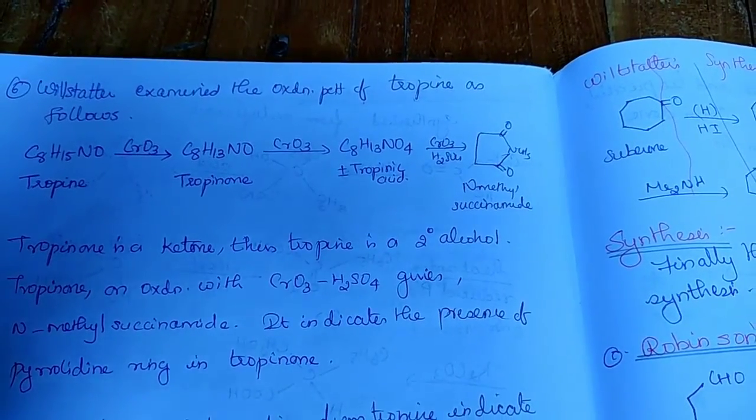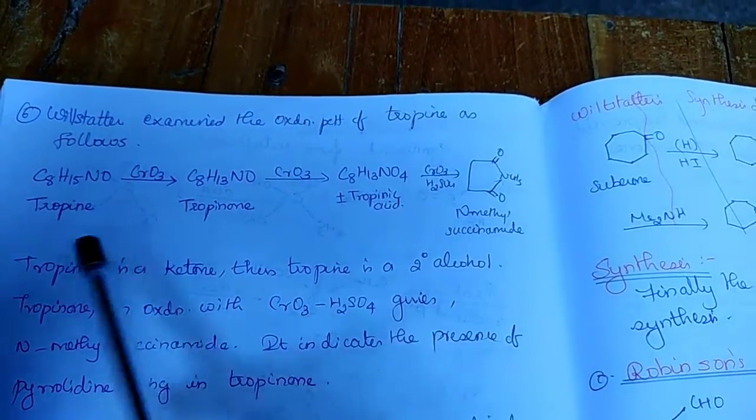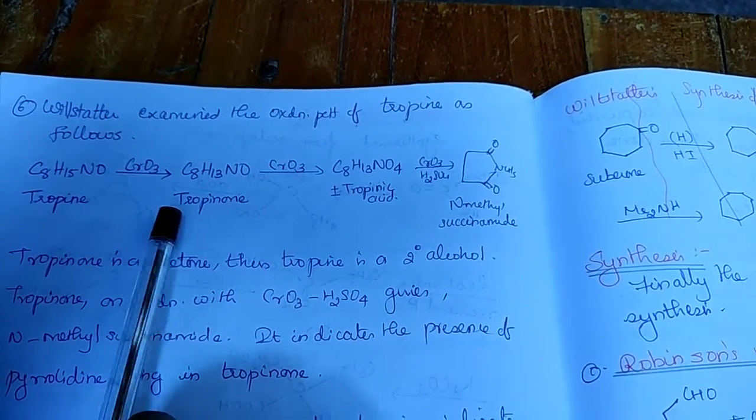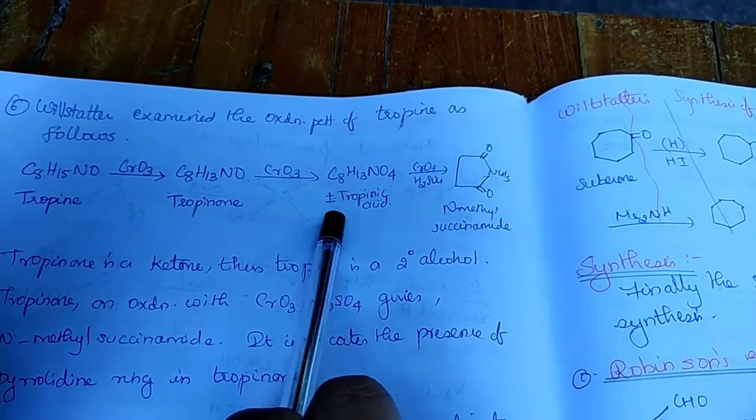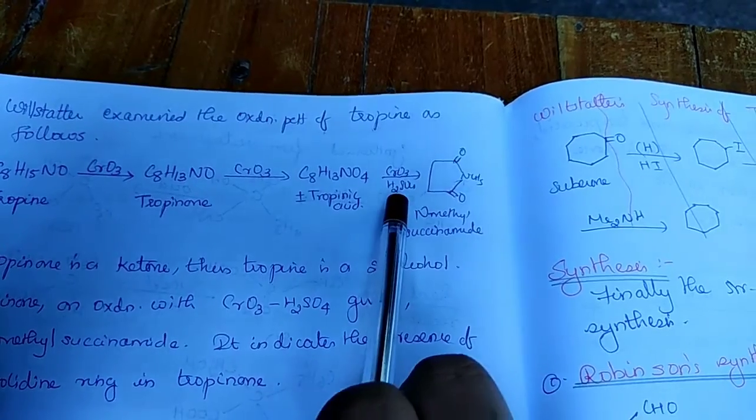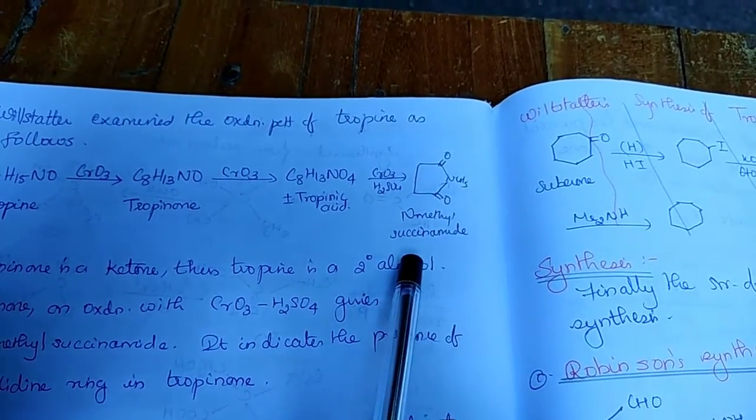Willstätter examined the oxidation products of tropine. Tropine on oxidation with chromium oxide, we get tropinone. On further oxidation, we get tropinic acid. And again on oxidation with acid, we get N-methylsuccinamide.